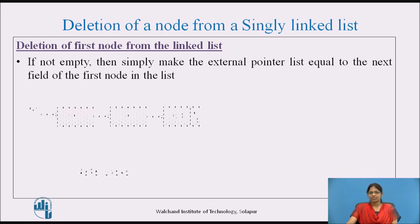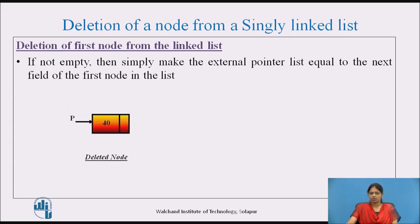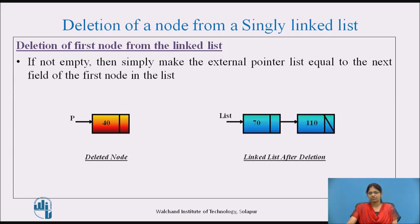This is illustrated with an example. Here is a linked list consisting of three nodes, with the head node pointed to by list and the last node terminated by null. Our task is to delete the first node. We assign a dummy pointer P to the first node. The list pointer is moved from the first node to the next node. After deletion, the deleted node is pointed by P and the updated linked list has only two nodes.